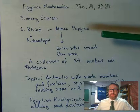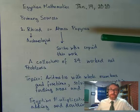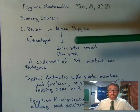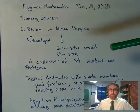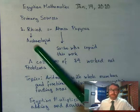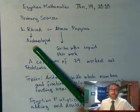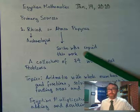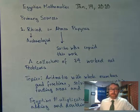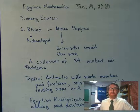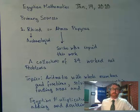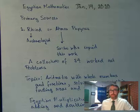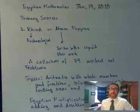So what we know about Egyptian mathematics comes from two main sources. The so-called Rhind or Ahmes Papyrus. Rhind is the British archaeologist who found the papyrus, and Ahmes is the scribe who copied down this work from an earlier version. This is a collection of 84 example problems that cover things like arithmetic with whole numbers and fractions, solutions to linear equations, and also some geometric problems that involve finding area and volumes.